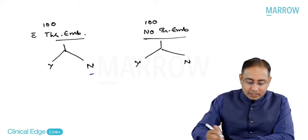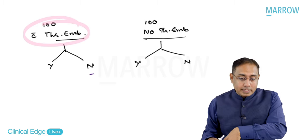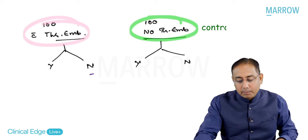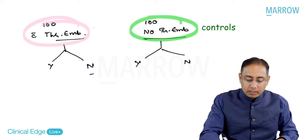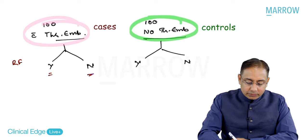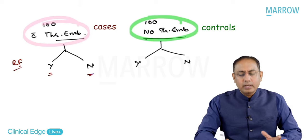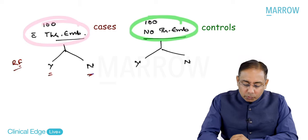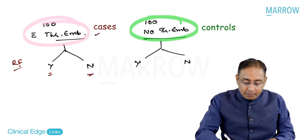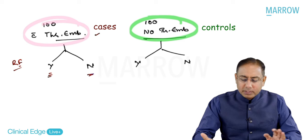In a case control study, I take 100 people with thromboembolic phenomena - those are my cases - and 100 people without thromboembolic phenomena as my controls, and ask them whether they took the vaccine. There are huge problems in case control designs: classifying who has thromboembolic phenomena, and recall of vaccine status can be problematic. There could be a lot of bias.